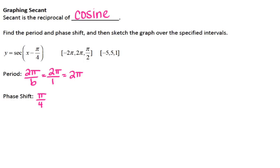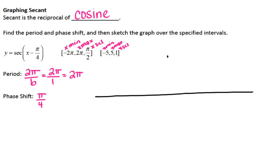For our drawing, we have x min, x max, x scale, y min, y max, and y scale. I'm going to draw my graph with the proper scaling. For my y-axis I'm going from negative 5 to 5, and for my x-axis I'm going from negative 2π to 2π, scaling it by π/2's — so that's going to be 4 tick marks.